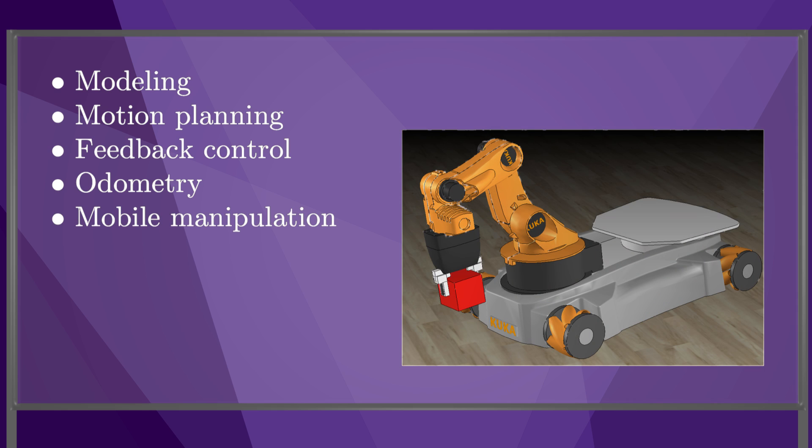And mobile manipulation, where the wheeled mobile base is equipped with a manipulator. In particular, we derive the Jacobian mapping wheel and joint velocities to the end-effector twist, and we use this to develop a coordinated controller for the mobile base and robot arm.